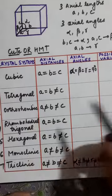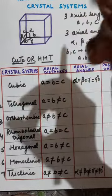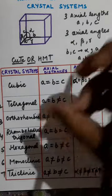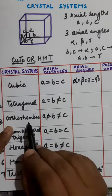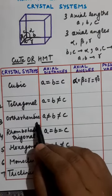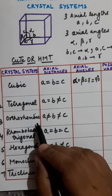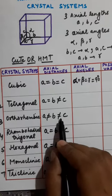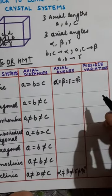In tetragonal, if you take a simple cubic system and push it upwards, one of the lengths will increase, and it becomes tetragonal. For orthorhombic, you can compare it with a matchbox — it has all different sides, meaning all sides are different but all angles are equal. That is known as orthorhombic.